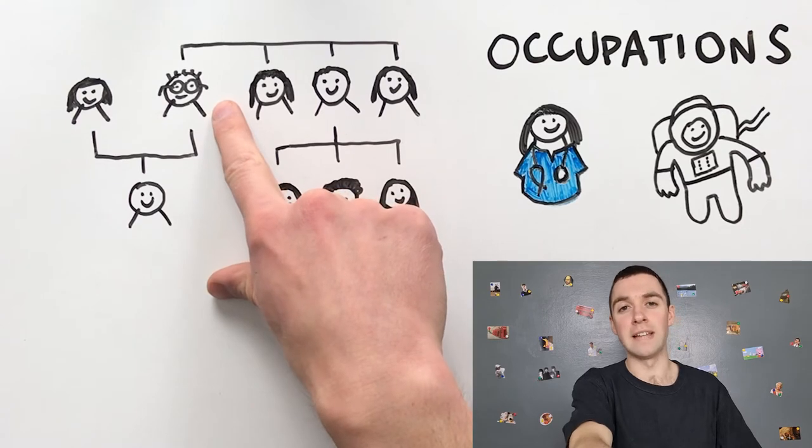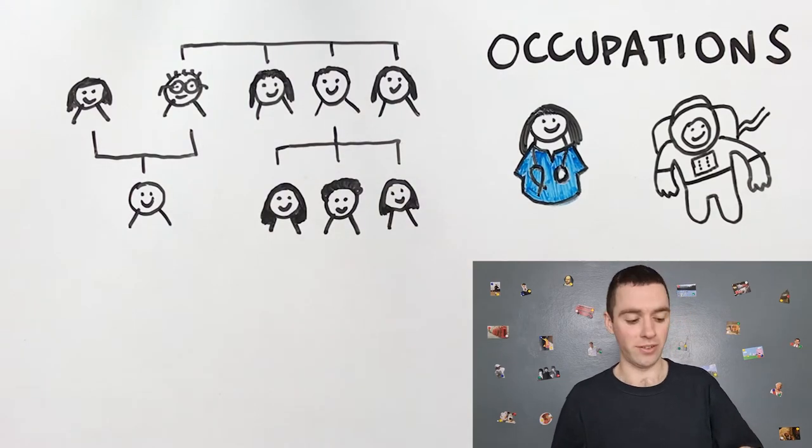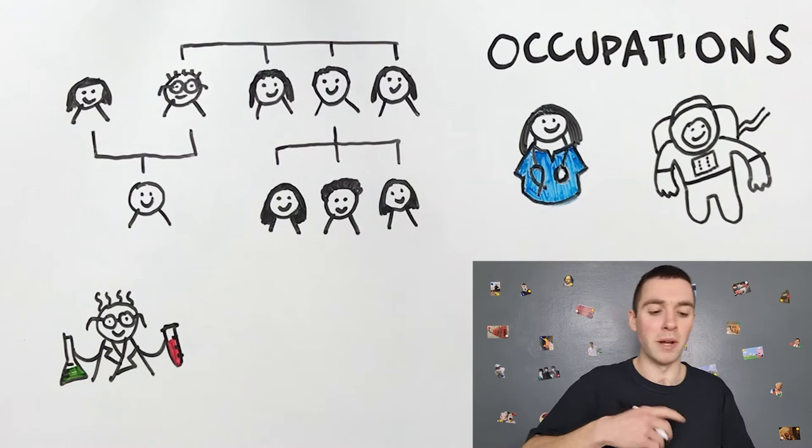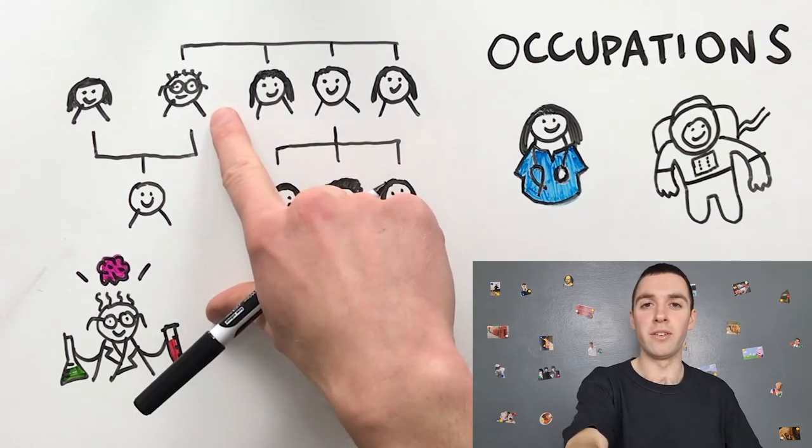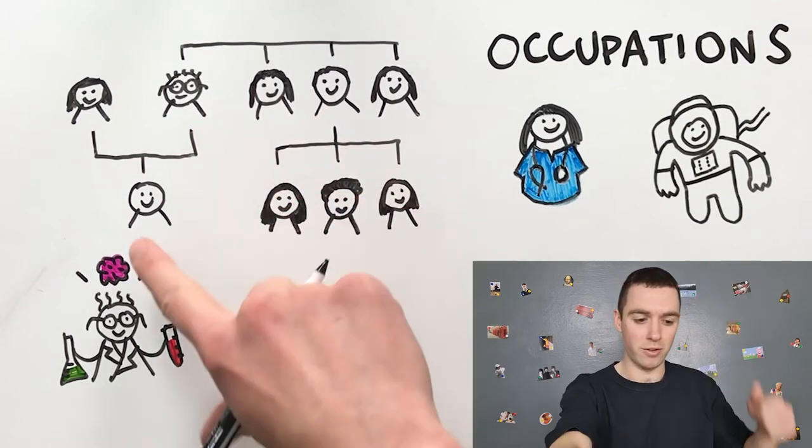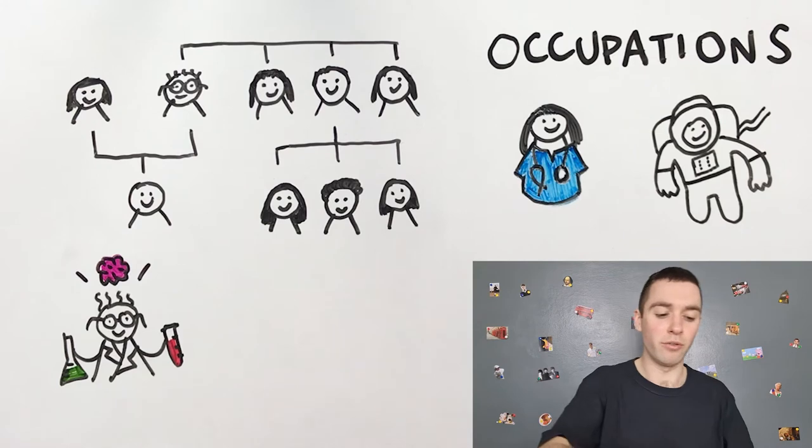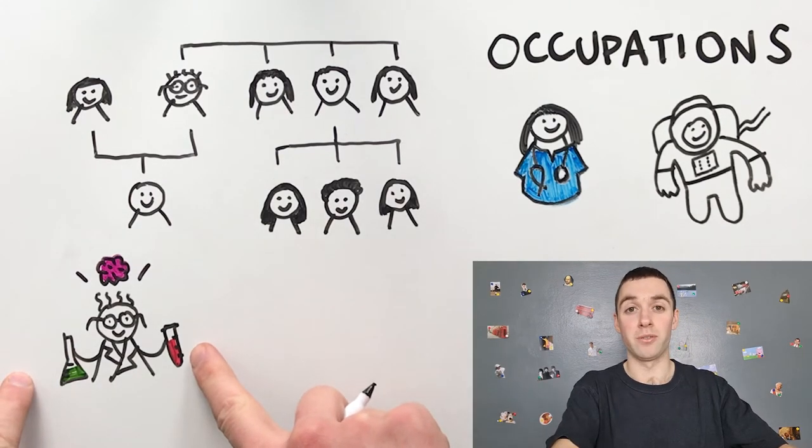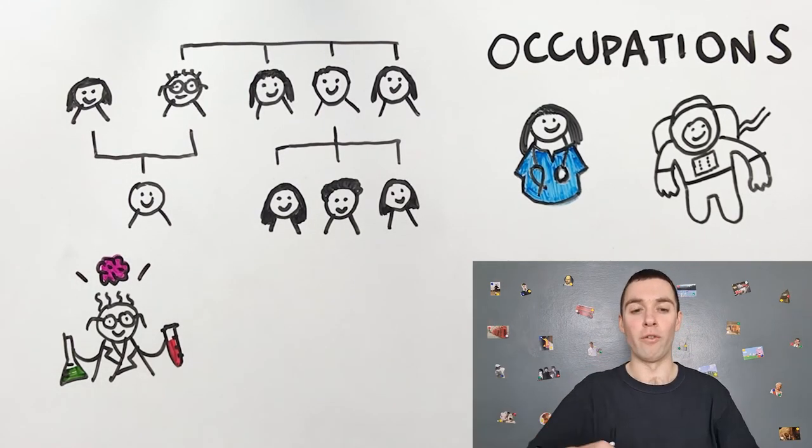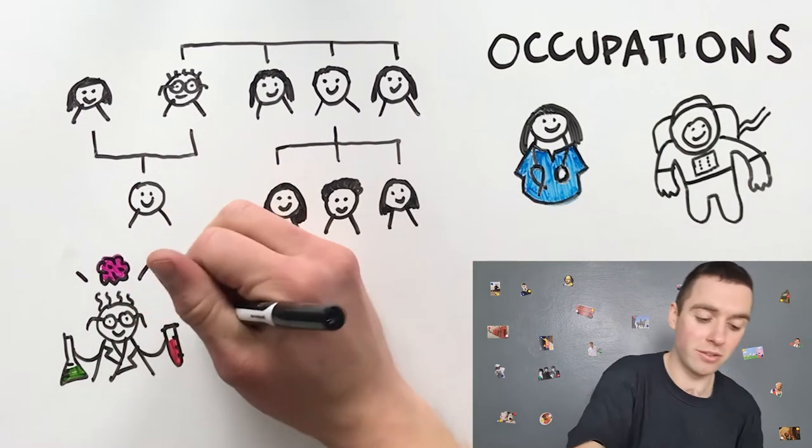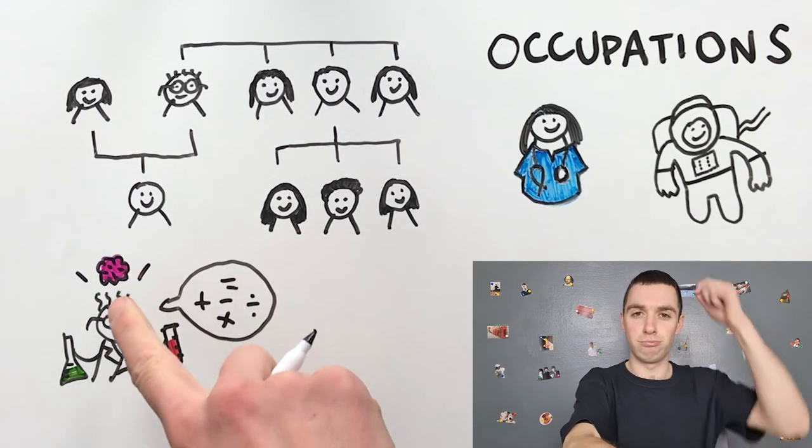My father or dad is a scientist. My father is very smart. He has a lot of brains. My father does experiments with potions and he does a lot of maths, mathematics, because he is clever.